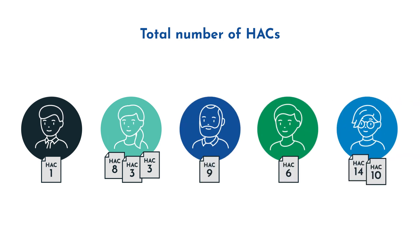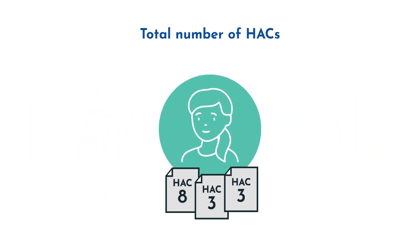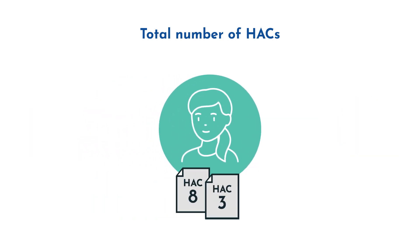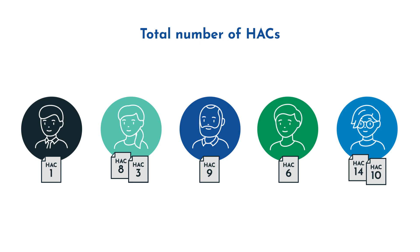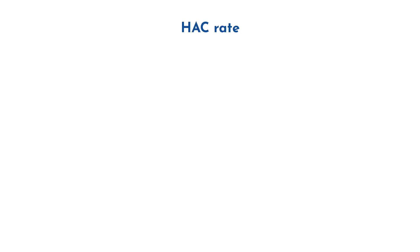Let's use an example to better understand this definition. These five patients represent eight HACs. Patient 2 had two healthcare associated infections, so we recorded HAC 3 twice during their admission. In this example, the total number of episodes with HACs will be five and total HAC count will be seven, as HAC 3 will only be counted once for patient 2.